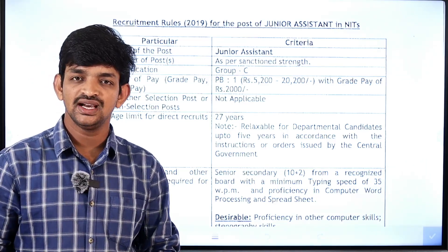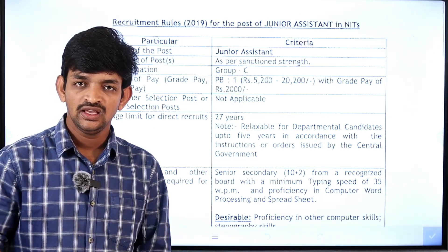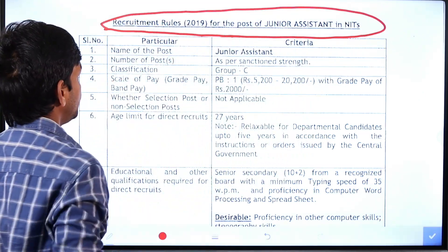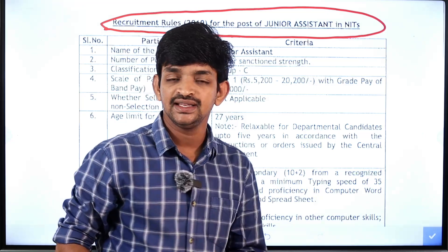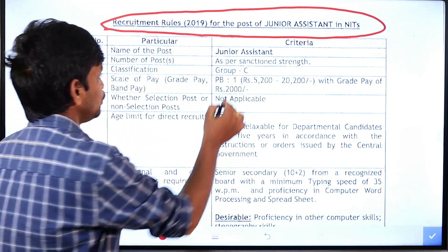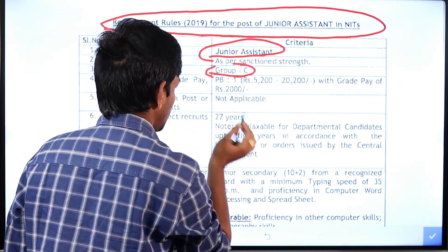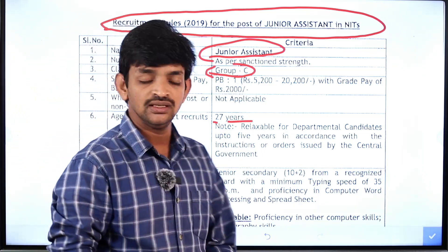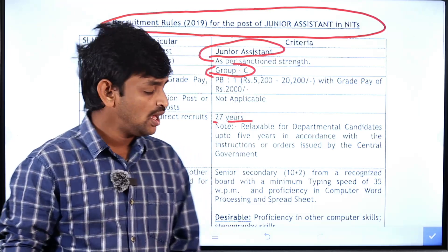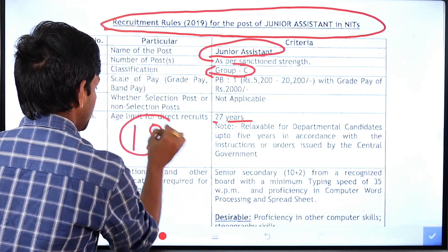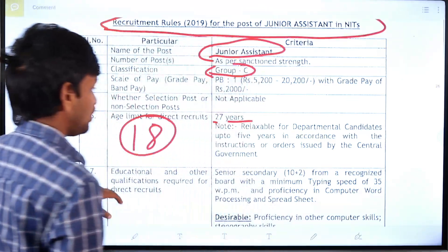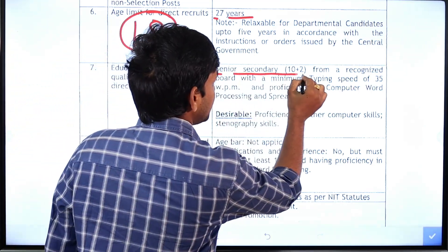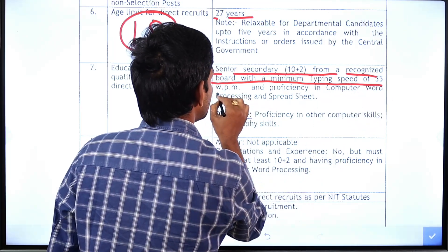We will check further details like education qualifications and age limits for the Junior Assistant post. As per the Recruitment Rules 2019 for the post of Junior Assistant in NITs, the age limit is a minimum of 18 years and a maximum of 27 years. The education qualification is Senior Secondary (10+2) from a recognized board, with a minimum typing speed of 35 words per minute.